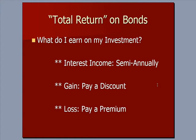The other type of return is that you may have paid more or less than par, which is $1,000. If you paid less than par — less than $1,000 — you always get $1,000 back, which is the face amount at maturity, so you'd have a gain. If you paid more than par and you only get $1,000 back at maturity, you'd have a loss. So we have to calculate a gain or a loss along with the interest income.